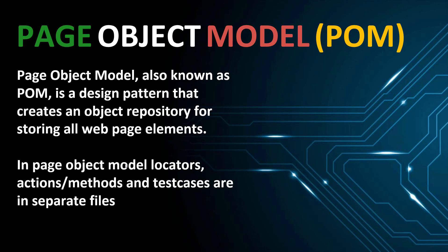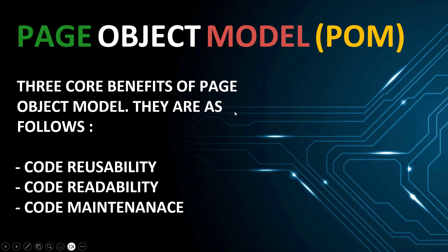In simple words, in Page Object Model we have a separate file for locators, actions or methods, and the test cases. There are three core benefits of using this design pattern: the first one is code reusability, the second is code readability, and the third is code maintenance.